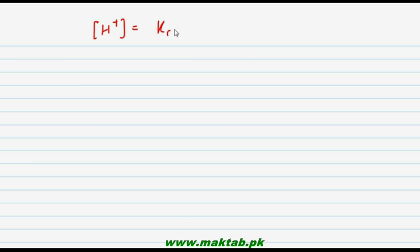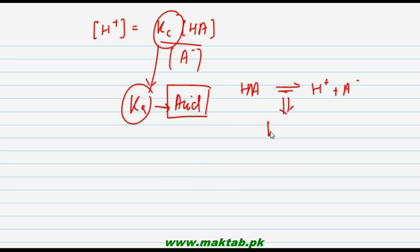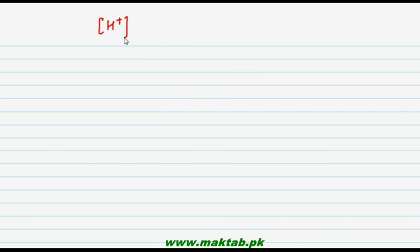H⁺ is equal to KC, which in this case will be Ka, because we are dealing with the dissociation of the acid HA → H⁺ + A⁻. So the equation becomes: H⁺ is equal to Ka into the concentration of acid divided by the concentration of A⁻.